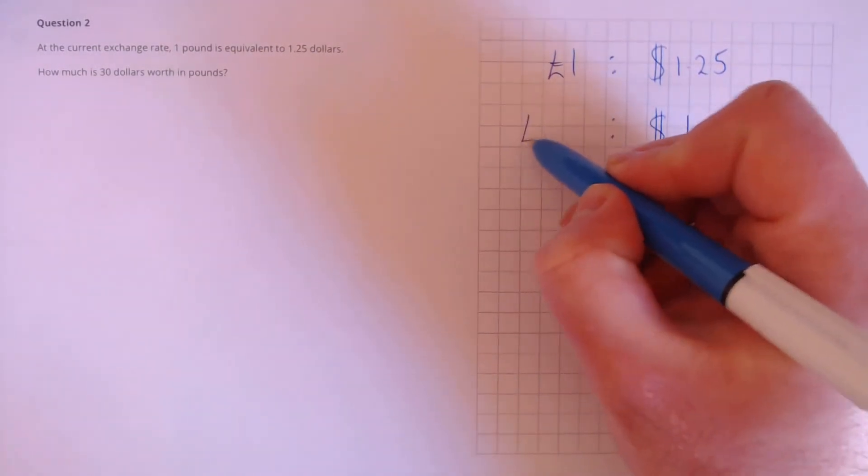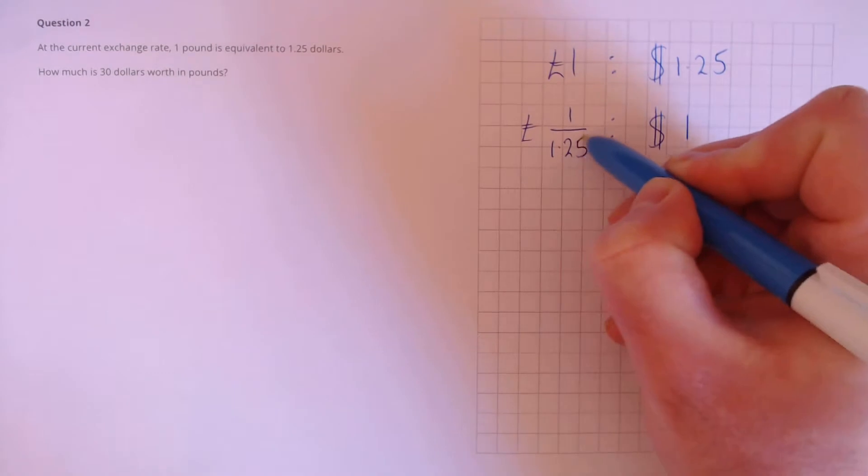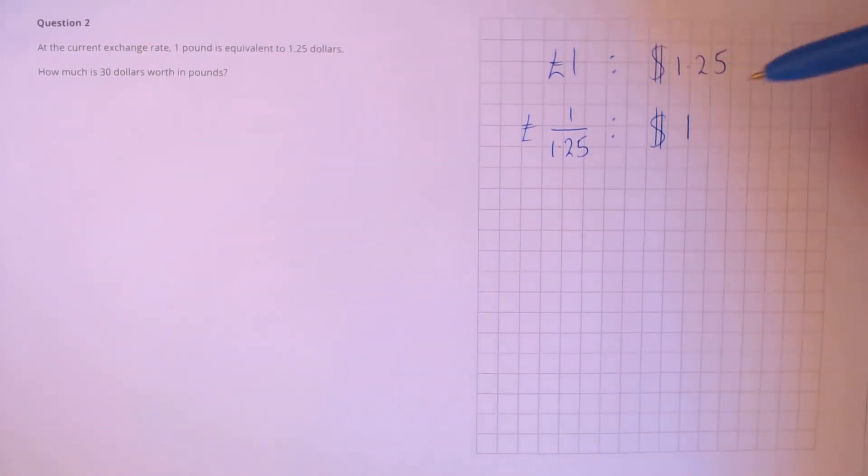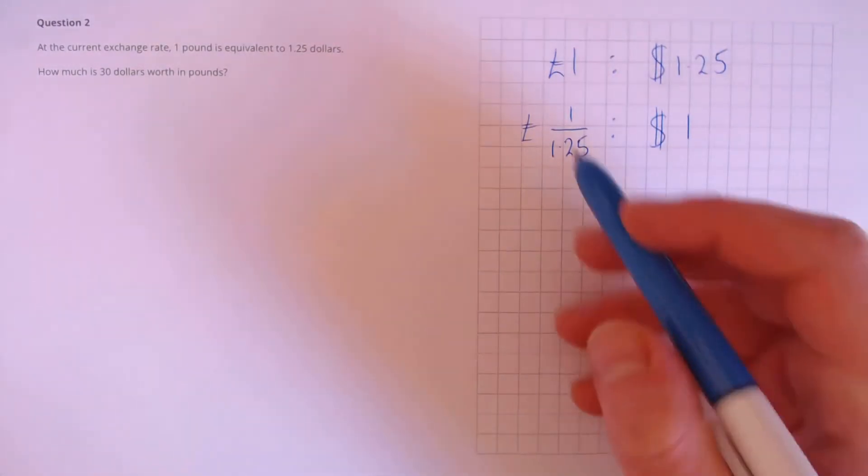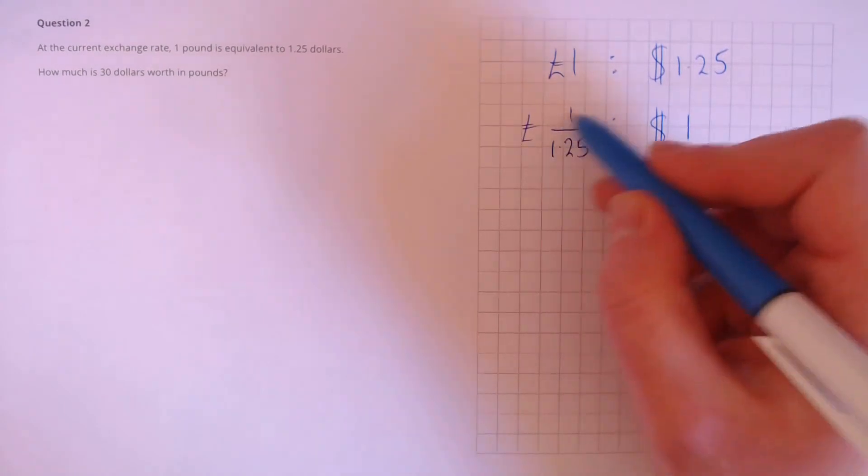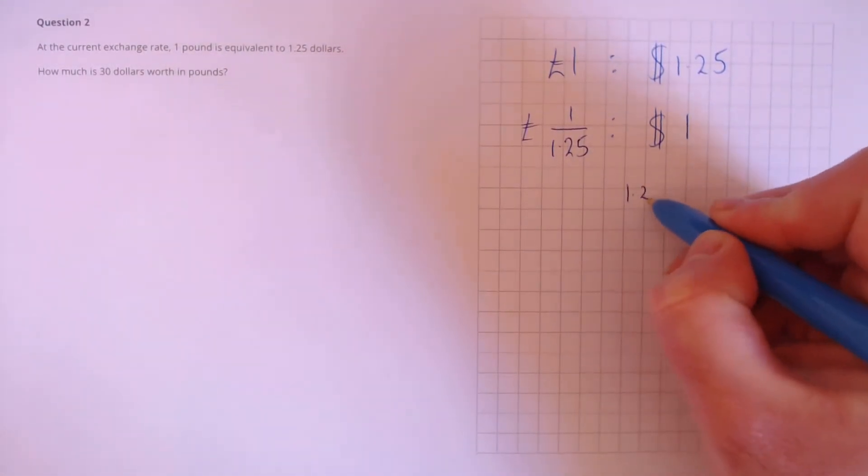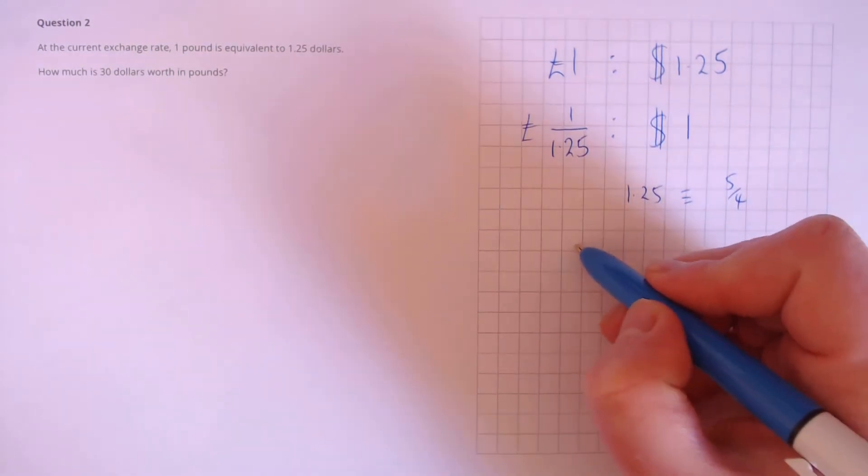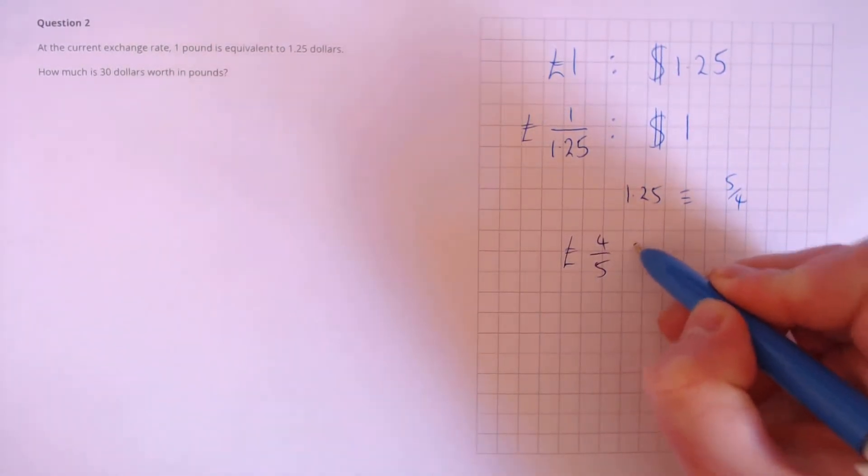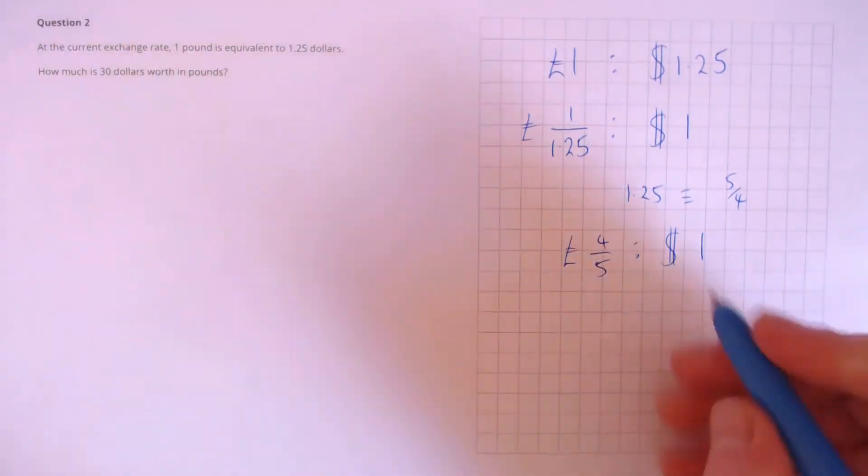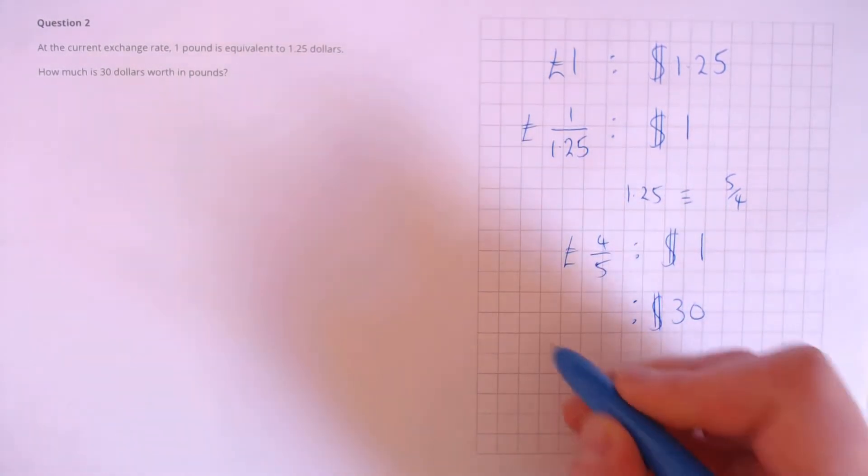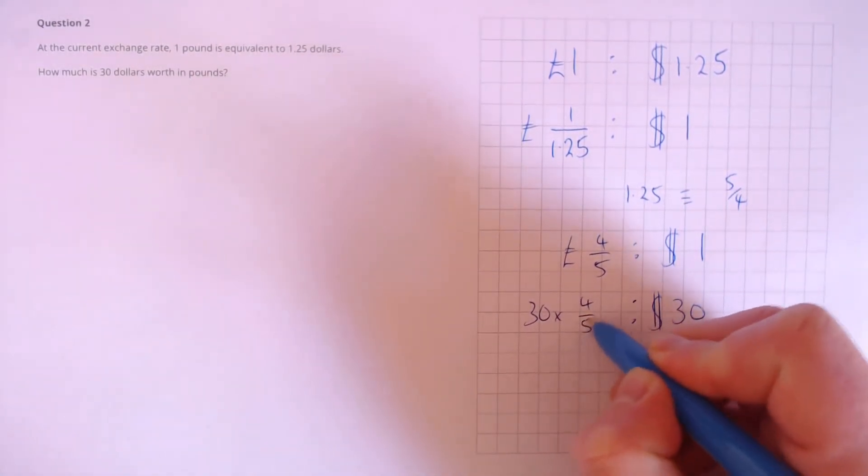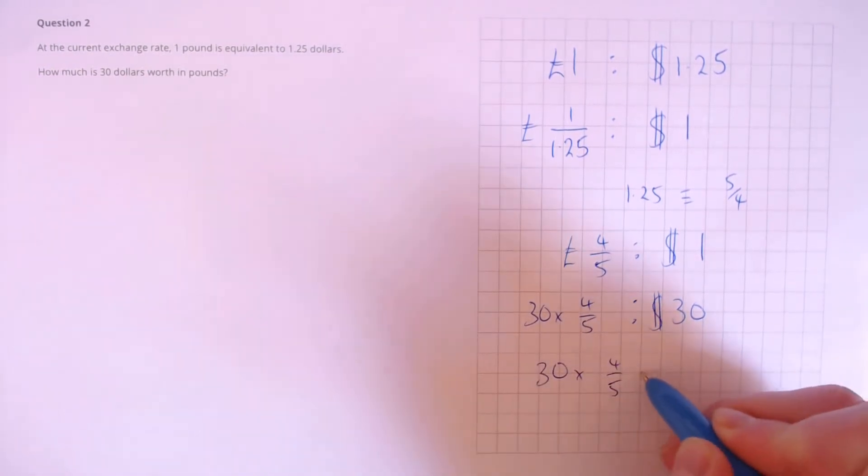$1 is equivalent to 1 over £1.25. What we've done here is we've divided both sides of the ratio by 1.25. That gives 1 here and 1 over 1.25. Next, I'm going to convert this into a fraction to make it a little bit easier. 1.25 is equivalent to 5 quarters, so 1 divided by that is 4 fifths. So 4 fifths of a pound is equivalent to $1. Now we need $30, so that's 30 lots of 4 fifths, 30 times 4 fifths. Well, 1 fifth of 30 is 6, 6 lots of that is 6 times 4, which is £24.